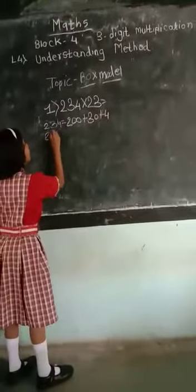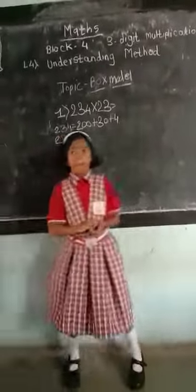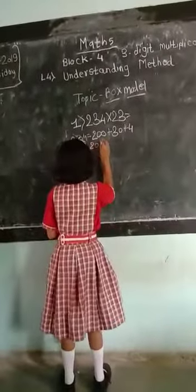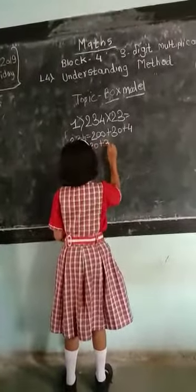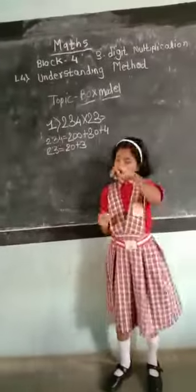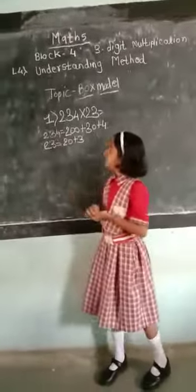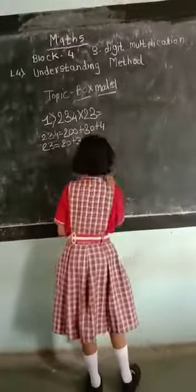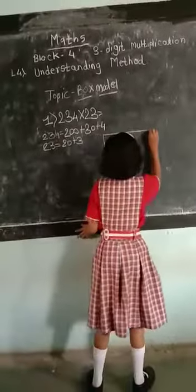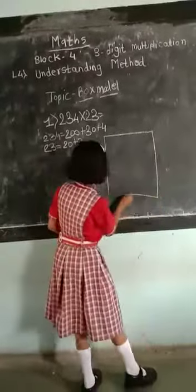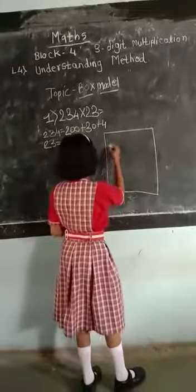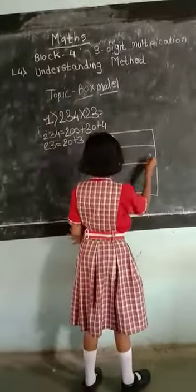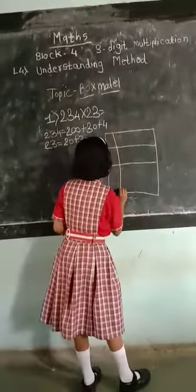Now, expanding form of 23: 20 plus 3. Very good. Now, the next step is to draw the box. We got 3 rows and 4 columns.